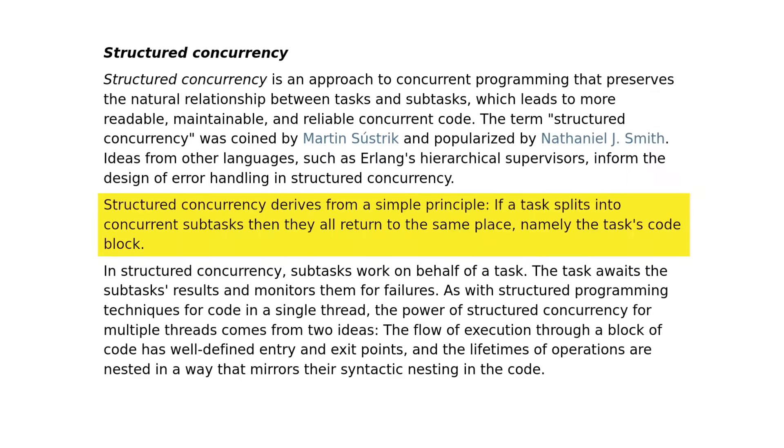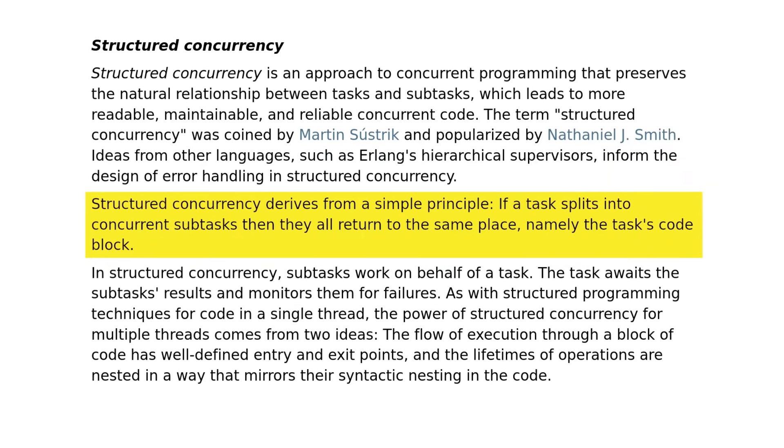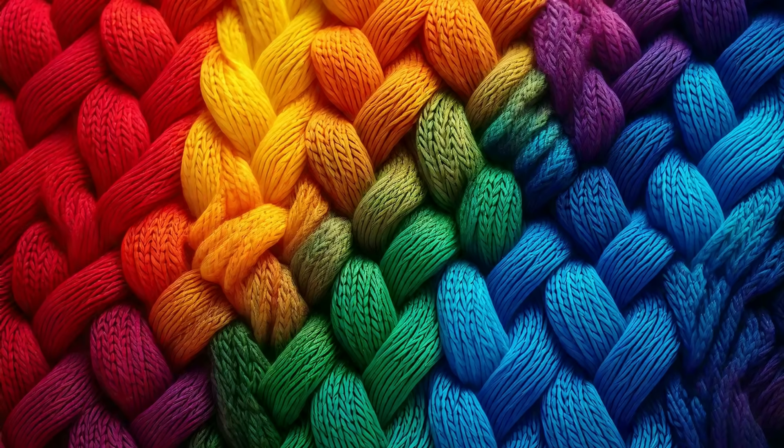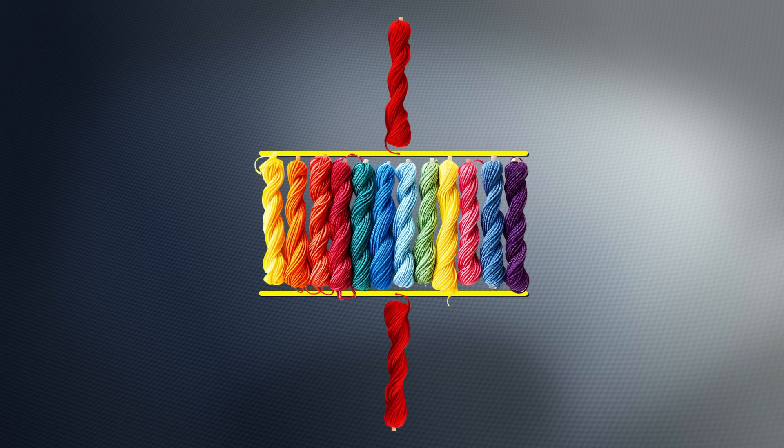Structural Concurrency derives from a simple principle: if a task splits into concurrent sub-tasks, then they all return to the same place — namely the task's code block. So instead of committing sub-tasks to a thread pool over there and then passing around futures to which you add result processing and error handling all over the place, waiting for the results who knows where, these sub-tasks are treated as a single unit of work. A single method has the responsibility to handle the entire concurrency life cycle of a set of related sub-tasks, while the task that spawned them waits for their completion. This restriction captures the natural relationship between tasks and sub-tasks, instilling structure: a parent thread that waits for its child threads to complete their work before it continues.